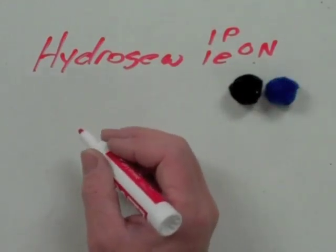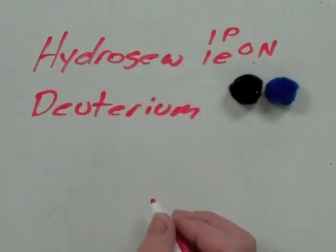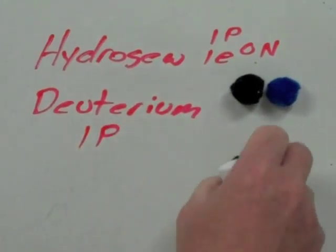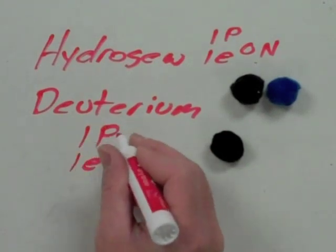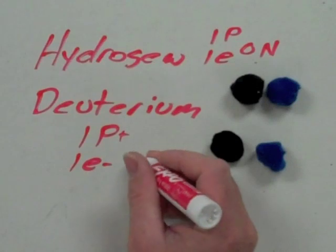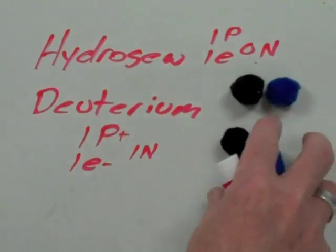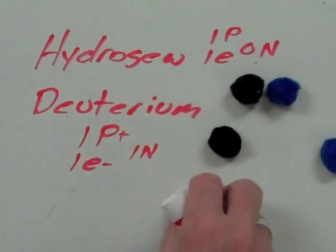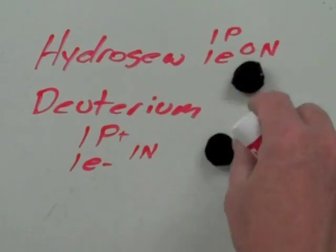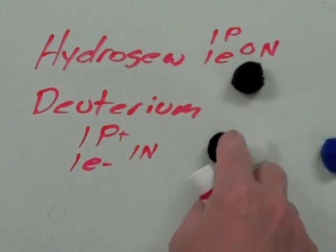Now we have another type of hydrogen that's called deuterium. Now deuterium, on the other hand, has one proton. So we're going to get one proton right here. It has one electron because it has to balance that positive charge. Remember that's positive and that's negative. So we have to get an electron also. And then it also has one neutron. And so we add a neutron now to this atom.